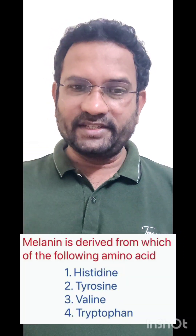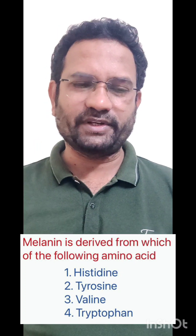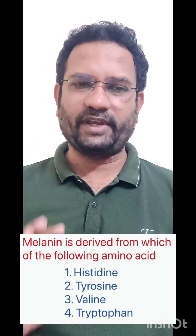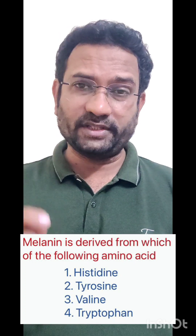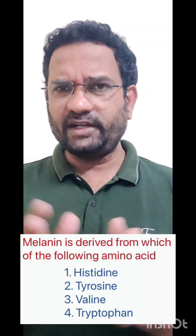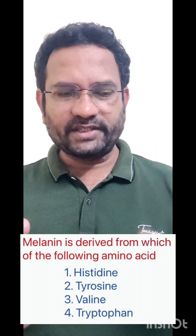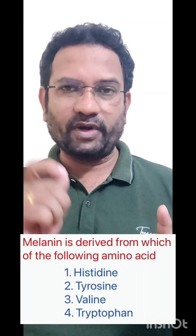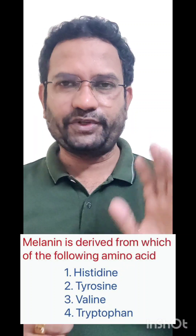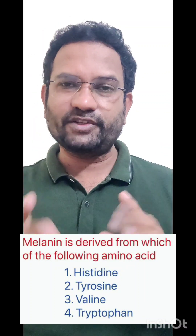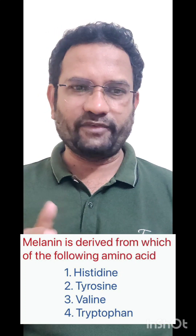Now the next question: Melanin is derived from which of the following amino acids? Options given are histidine, tyrosine, valine, tryptophan. Now we have seen histidine already — decarboxylation of histidine gives histamine. Histamine is only an amine, while histidine is an amino acid. The term 'histamine' comes from the idea that from tissues a chemical amine is released. But melanin is not derived from histidine.